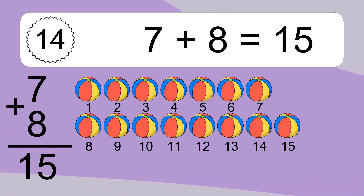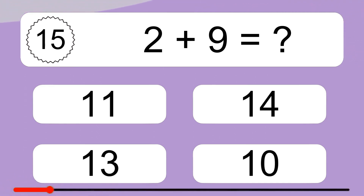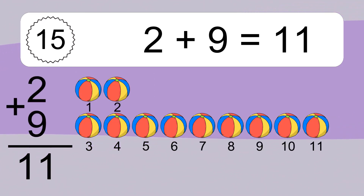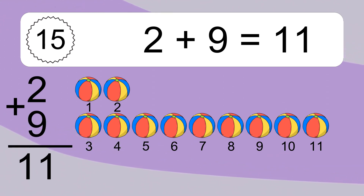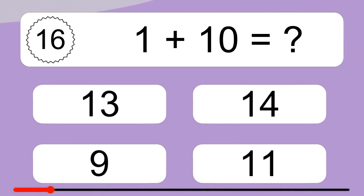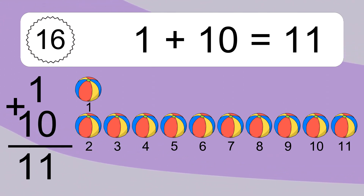13, 14, 15. 2 plus 9 equals what? 2 plus 9 equals 11. Let's count it: 1, 2, 3, 4, 5, 6, 7, 8, 9, 10, 11. 1 plus 10 equals what? 1 plus 10 equals 11. Let's count it: 1, 2, 3, 4, 5, 6, 7, 8, 9, 10, 11.